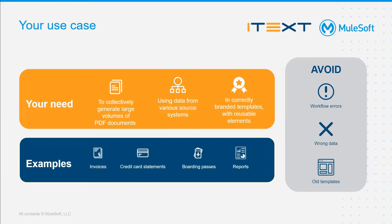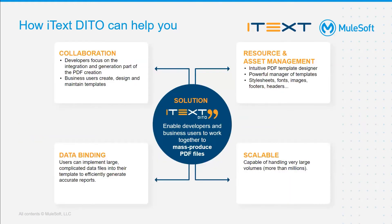This complicated process can be negatively impacted by workflow errors, inputting wrong data, or using outdated templates. iText Deto provides a solution to these problems, offering a more collaborative approach. This allows developers and business users to work more efficiently with one another to mass-produce PDF documents, implement large complicated data files into templates to better generate accurate reports, while providing users the capability to manage their assets and resources. iText Deto is scalable, able to handle very large volumes, even up to millions.